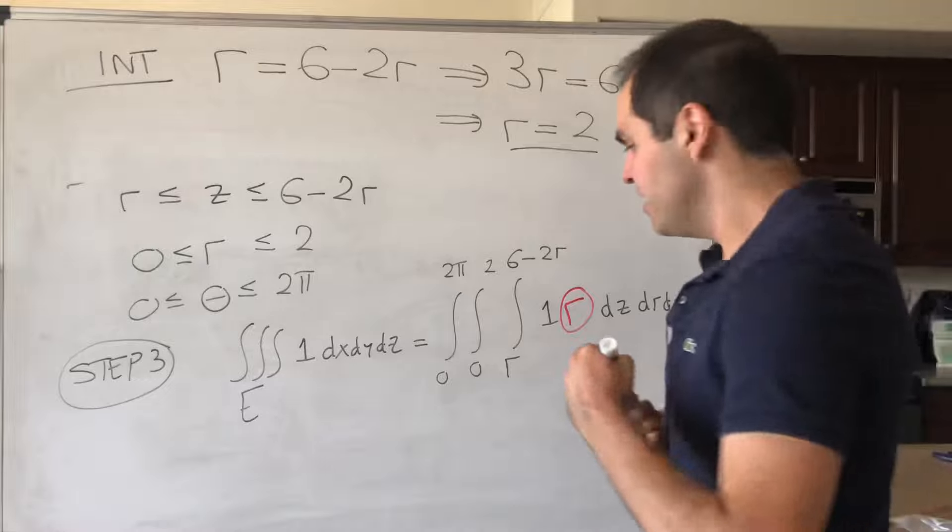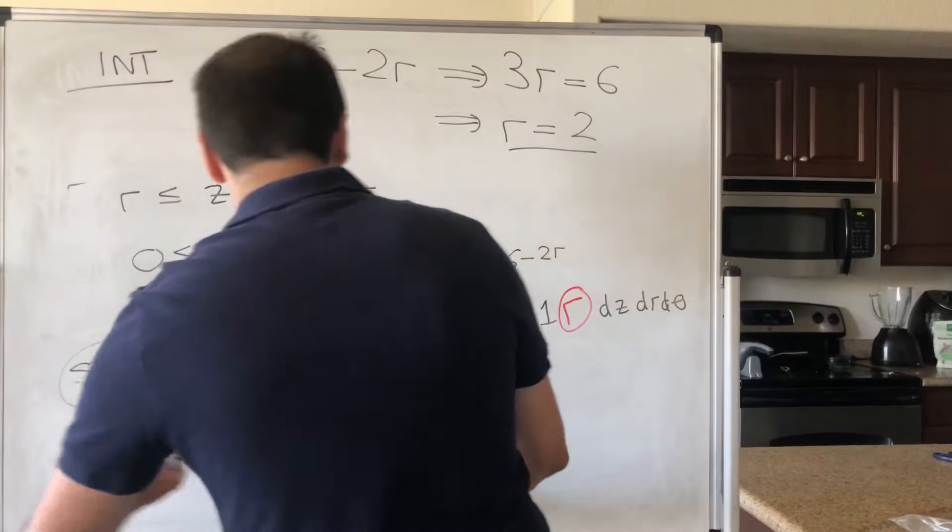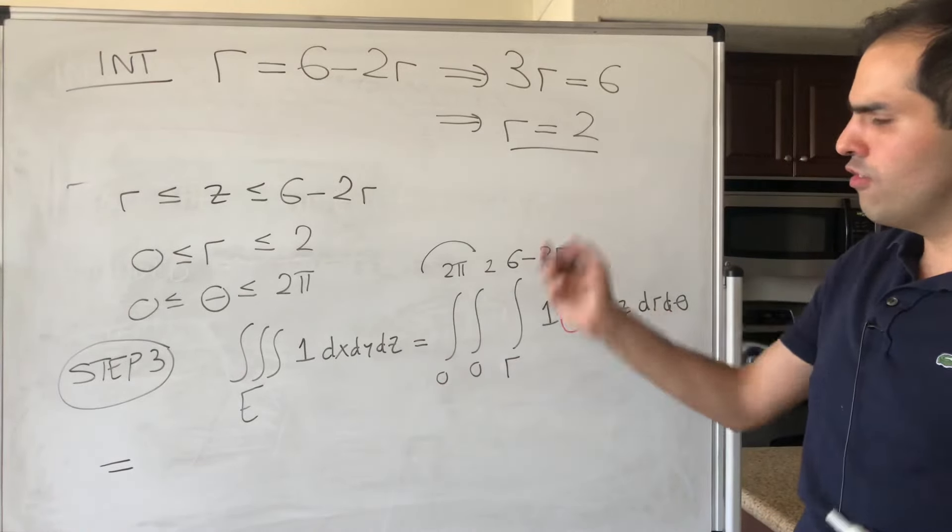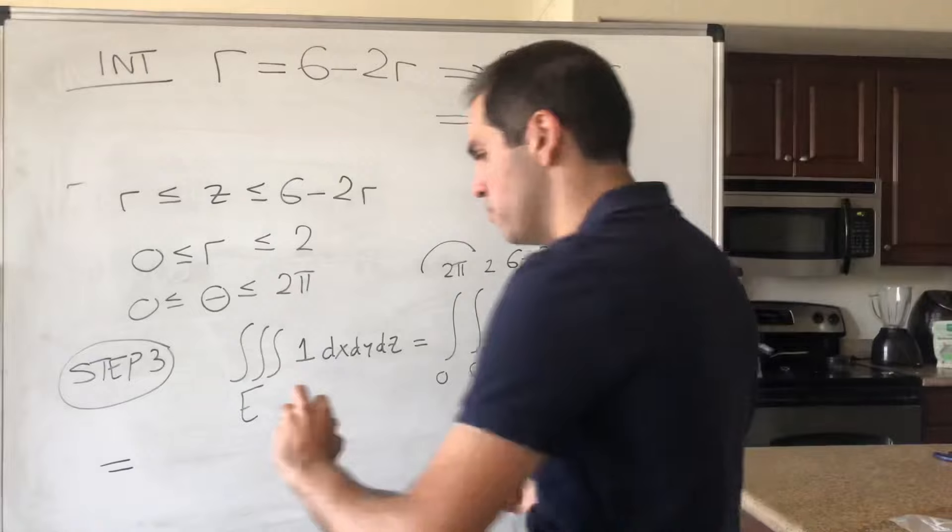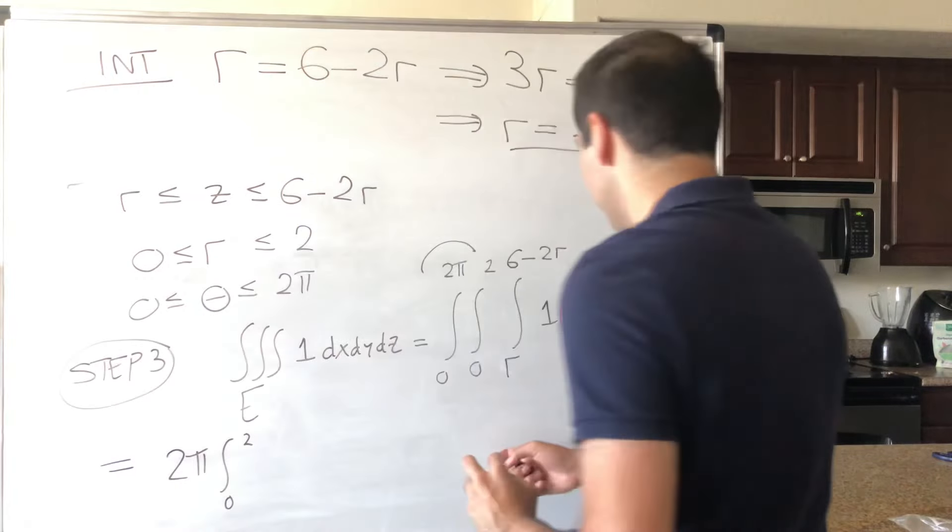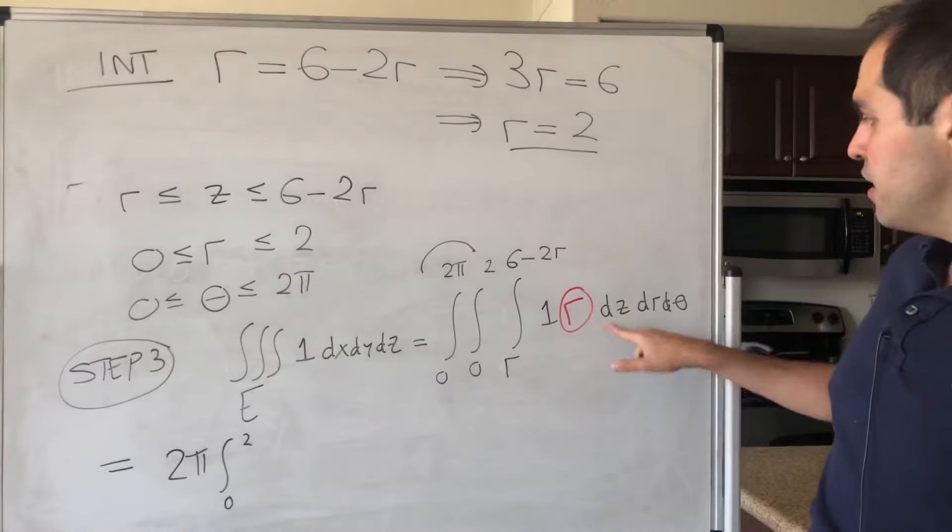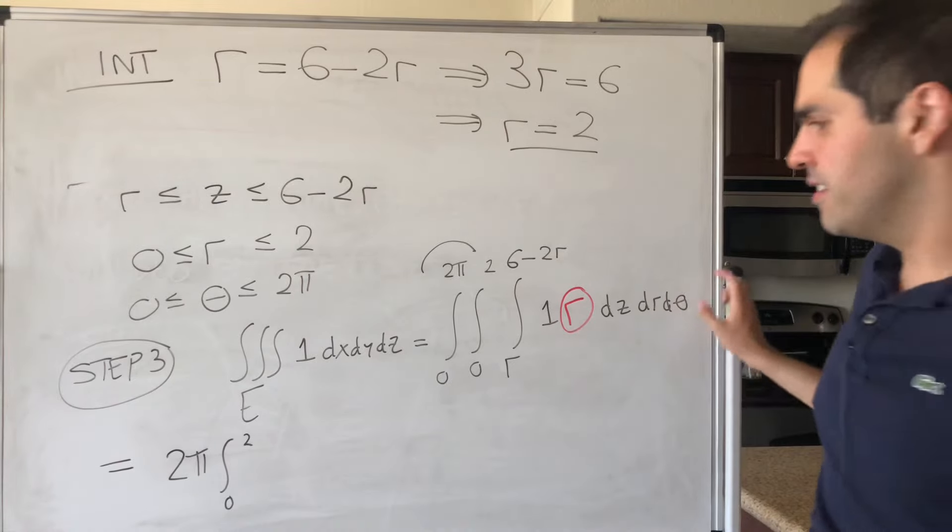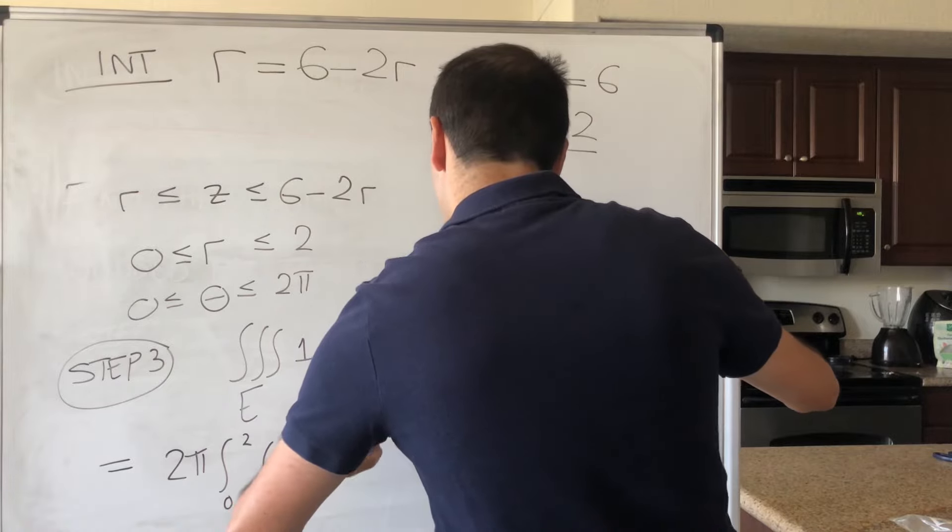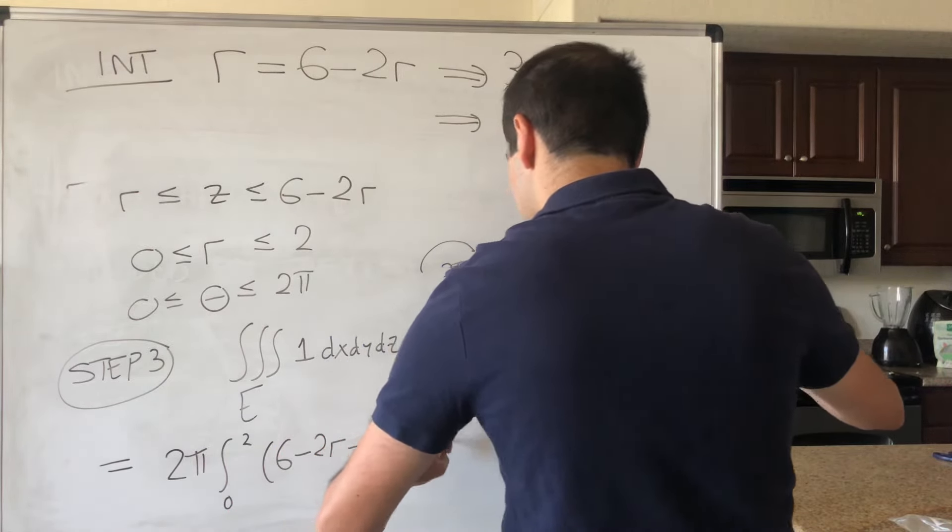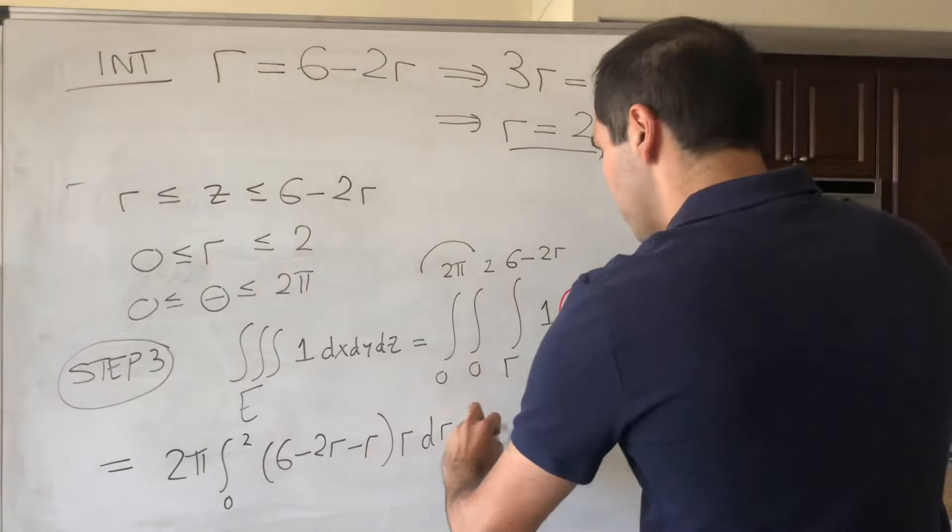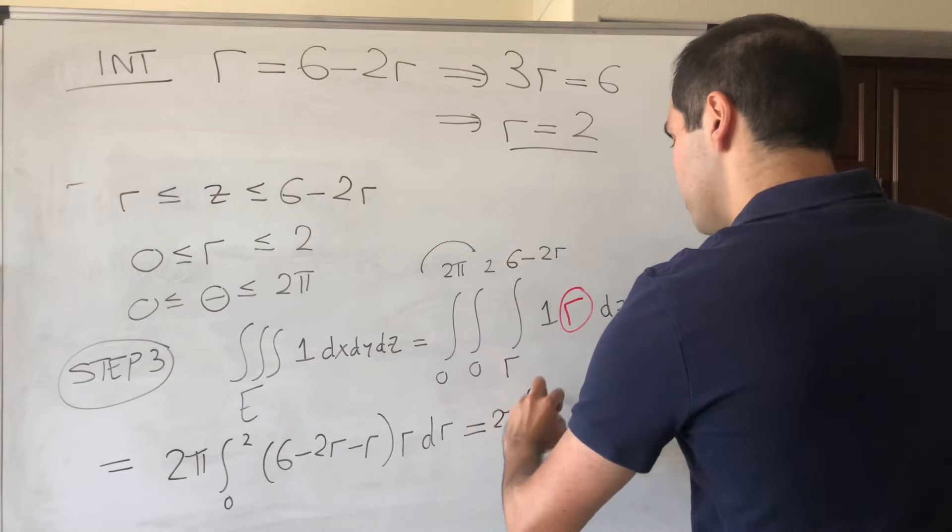Okay. And then, we can evaluate this. It's actually not too bad. So, first of all, I would like to remind you, there is no theta in this integral. So, this integral from 0 to 2 pi just becomes 2 pi times whatever we have. So, 2 pi times integral from 0 to 2. Now, here, there is no z. So, we can literally do this minus this. So, 6 minus 2r minus r, again, times r dr. And, the nice thing is, now, we're just left with a single integral.